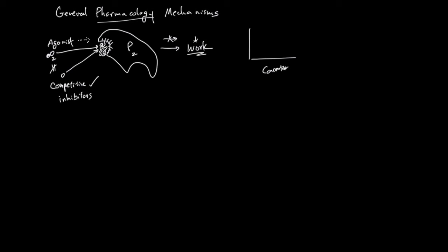Let's draw a quick intuition diagram. The x-axis is the concentration of the agonist and the y-axis is the effect. Usually as you increase the concentration, the effect goes up and plateaus — this is the natural maximum. Now, if you add agonist plus a competitive inhibitor together, then you need to add much more agonist to get to the same amount of effect.